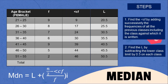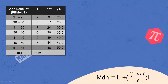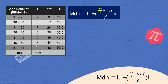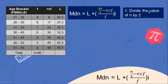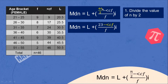The total frequency N is 46, meaning we have 46 female respondents. The first step in substituting into the formula is to divide N by 2: 46 ÷ 2 = 23.